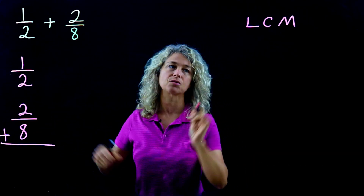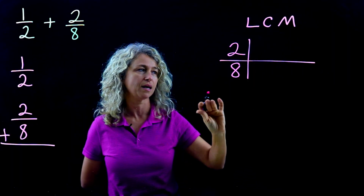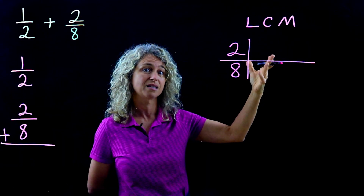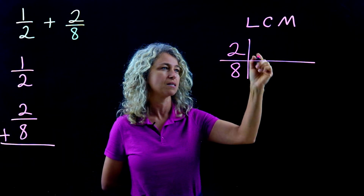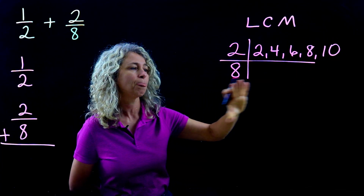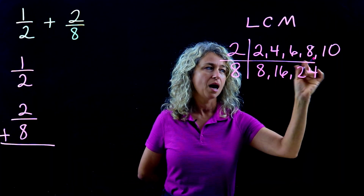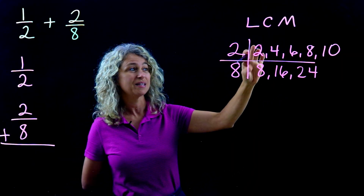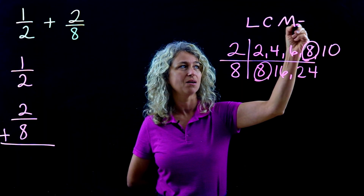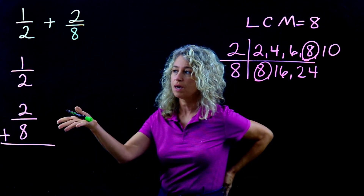To find the least common multiple, we look at the two denominators: 2 and 8. Let's make a little chart and list out the multiples to find what is the least common of both. So: 2, 4, 6, 8, 10... and for 8: 8, 16, 24. I can stop because I see that 8 is in common, so 8 is going to be my LCM.